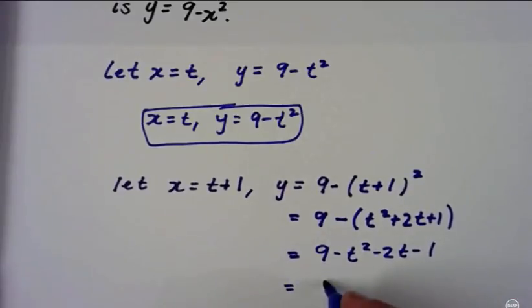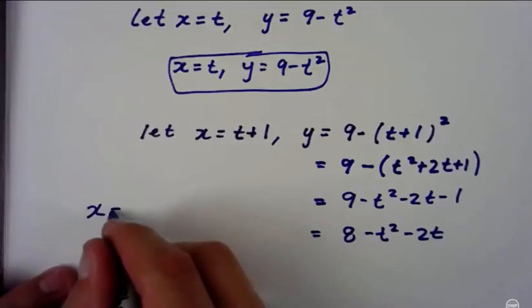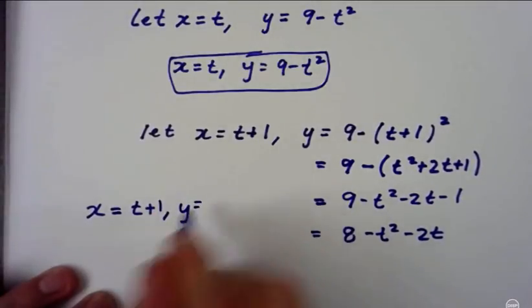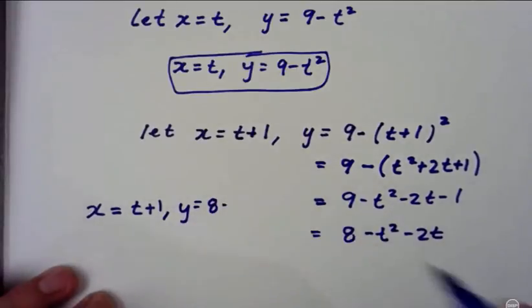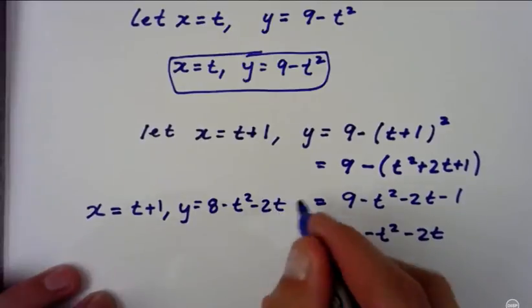So I'm left with 8 minus t squared minus 2t. So another way to write this is x equals t plus 1 and y equals 8 minus t squared minus 2t. And there's another answer.